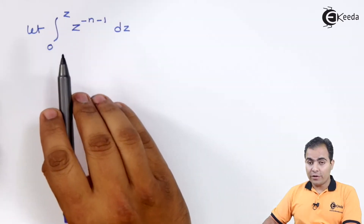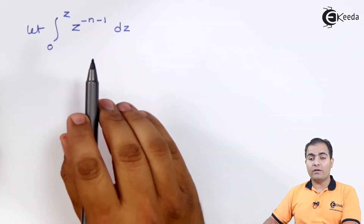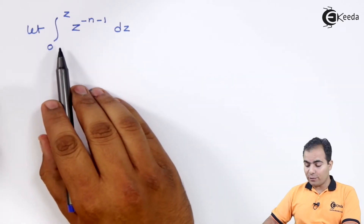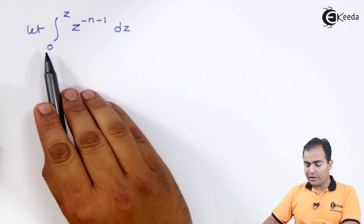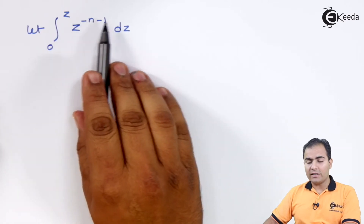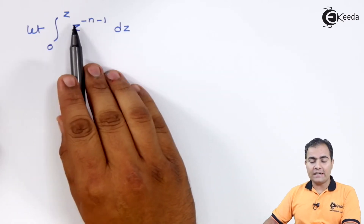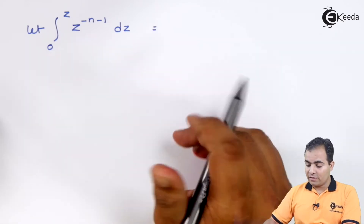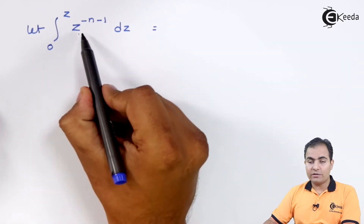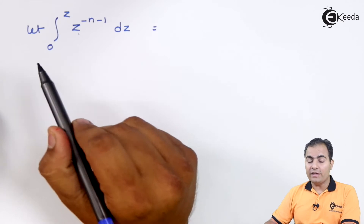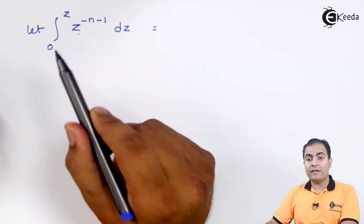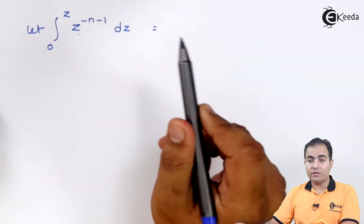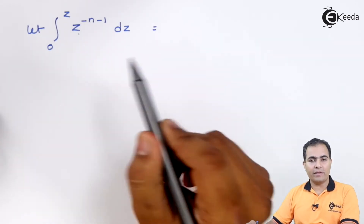We are going to prove the integration property in Z-transform, so we apply integration. Suppose we integrate Z to the power minus N minus 1 over the range from 0 to Z with respect to dZ. We know that integrating Z to the power N increases the order by 1 and divides the whole function by N plus 1.